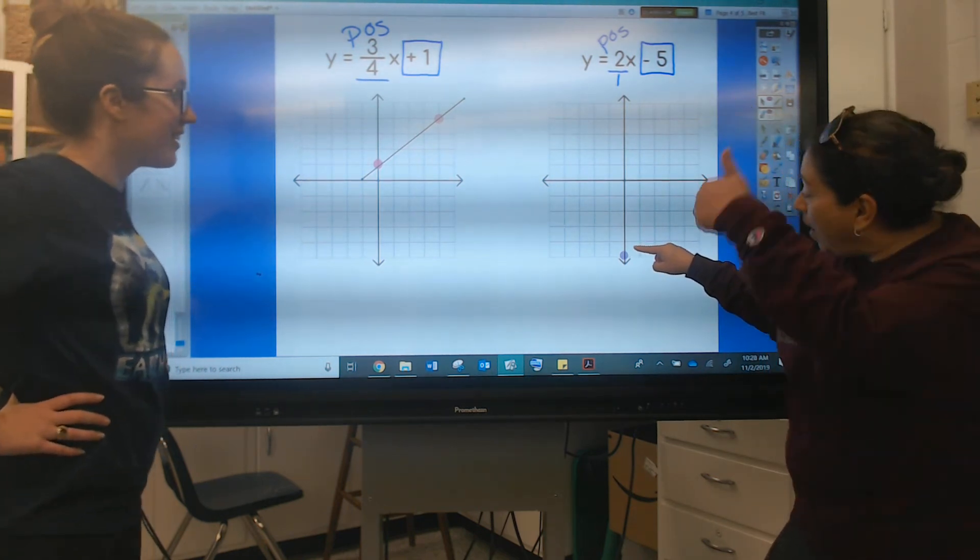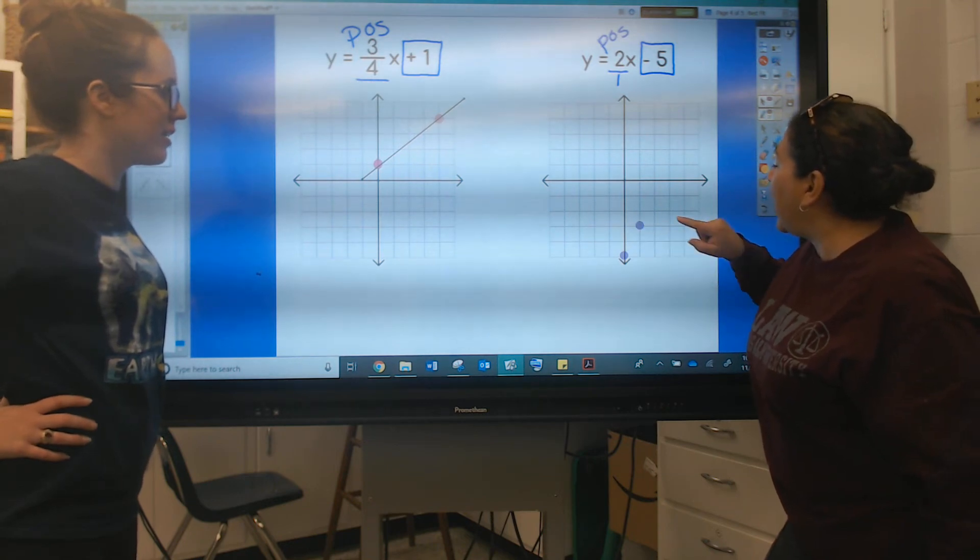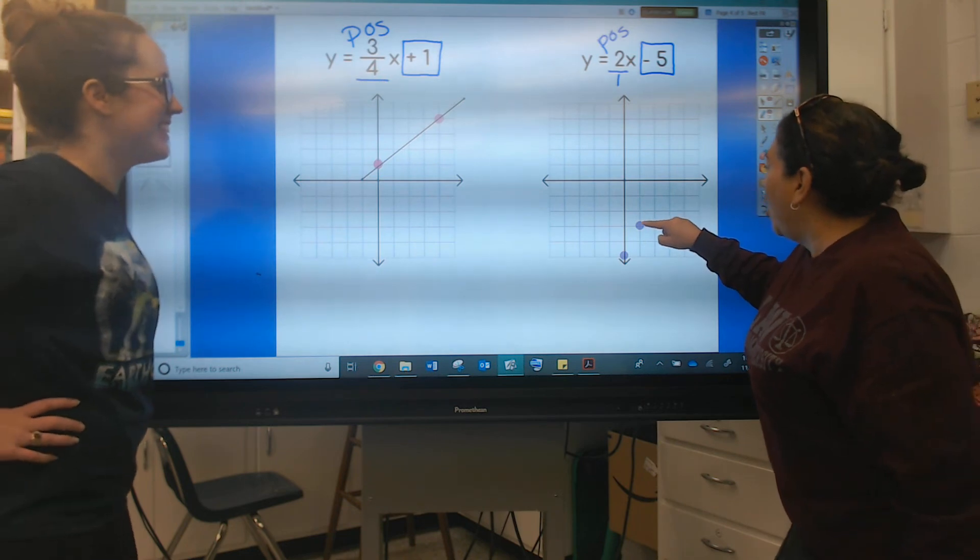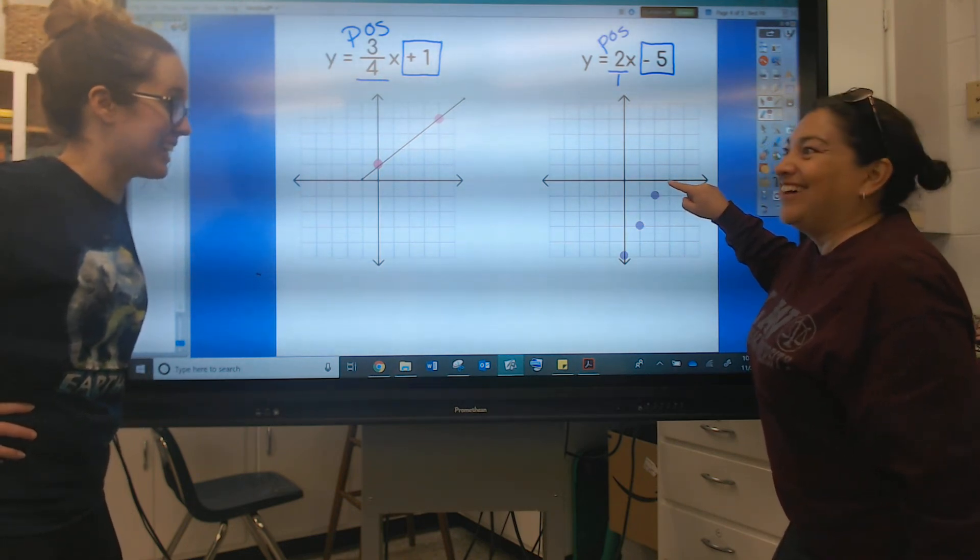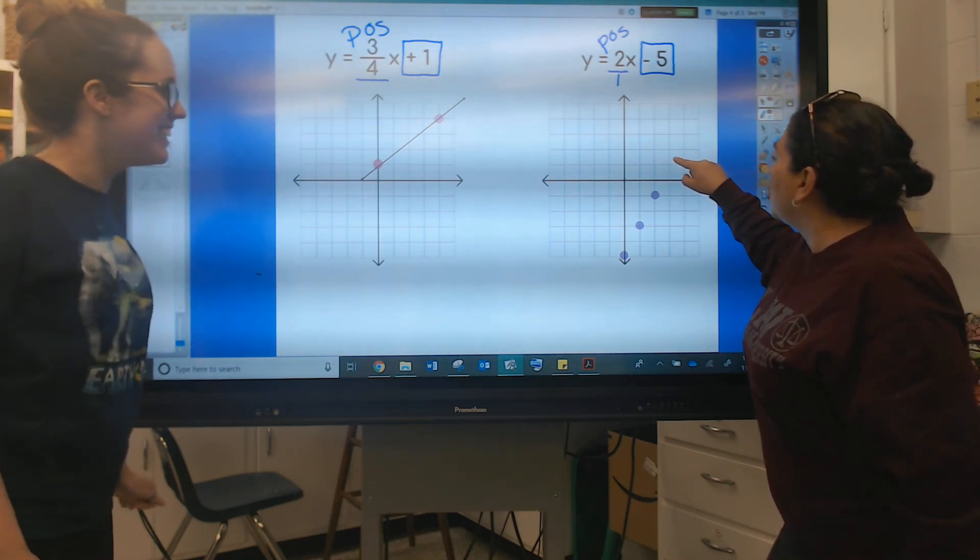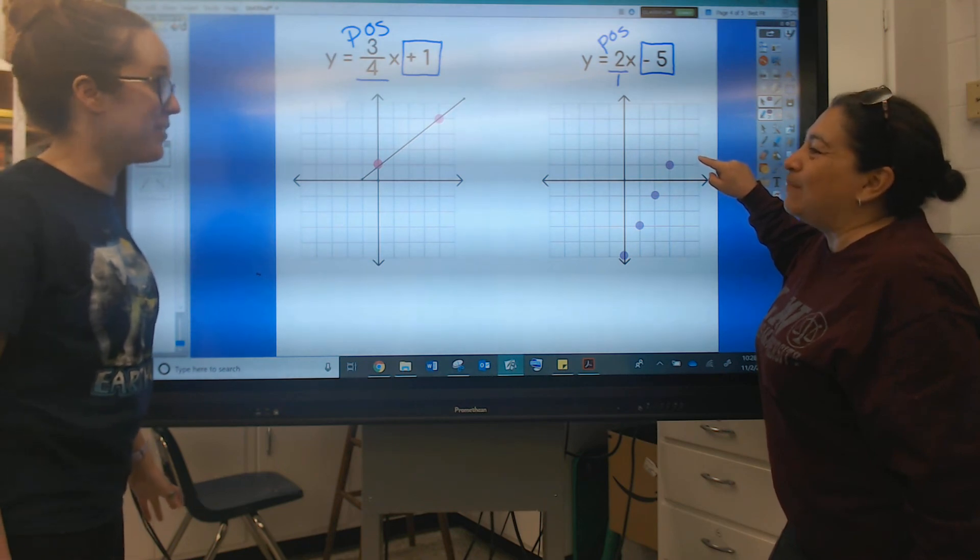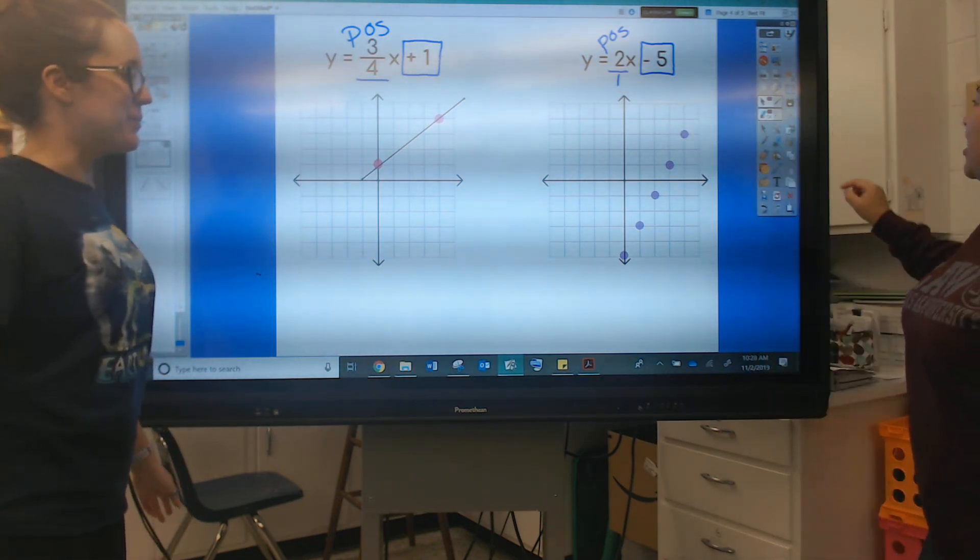Starting at y-intercept, I go up two, one, two, to my right one, and plot a point. Beautiful. Can I do it again? Yes, again. One, two, to my right one, plot a point. Can we do it again? Yes. One, two, to the right, plot a point. I'm so excited, can I do it one more time? There's still room. One, two, plot a point. There you go.